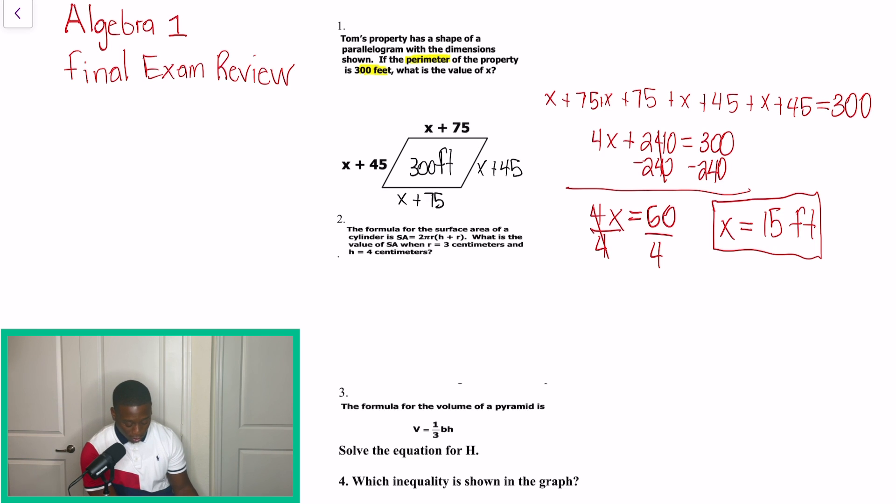And problem number two now is talking about surface area of a cylinder. And when we look at this problem right here, it's telling us that surface area is equal to 2 times pi times R. And in parentheses, H plus R. And they tell us that R is equal to 3 centimeters and H is equal to 4 centimeters. So with this typical problem, we're lucky because they do not want us to change pi, that pi symbol to 3.14. We're going to keep it the same.